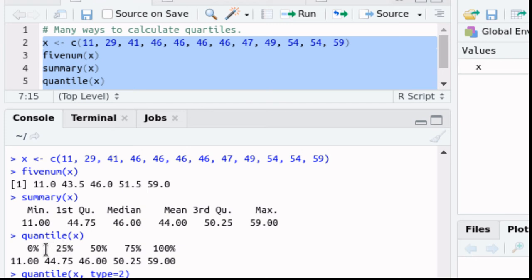Quantile by default gives you the 0th percentile, the 25th percentile which is the same as the first quartile, the 50th percentile which is the same as the median, the 75th percentile is the same as the third quartile, and of course the 100th percentile which is the same as the maximum.